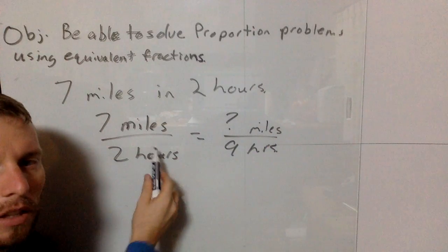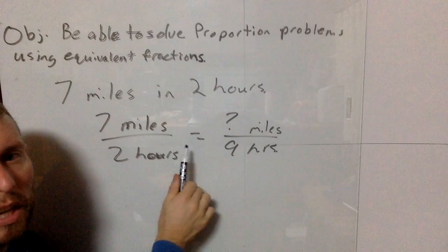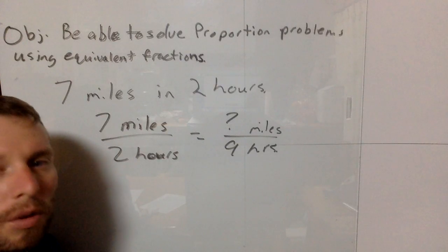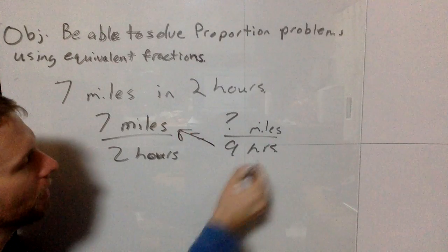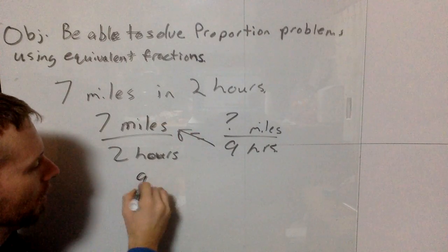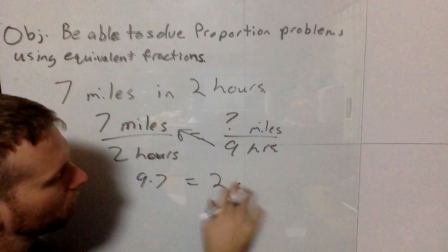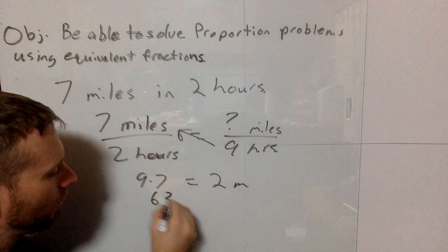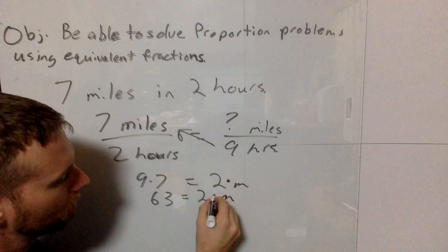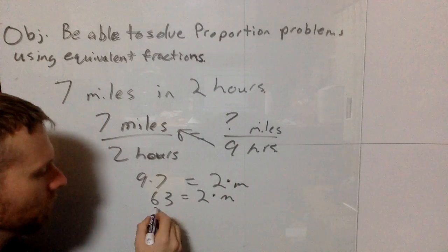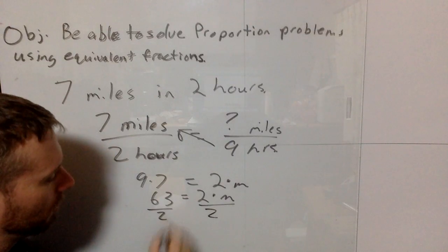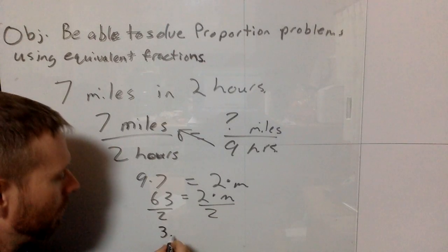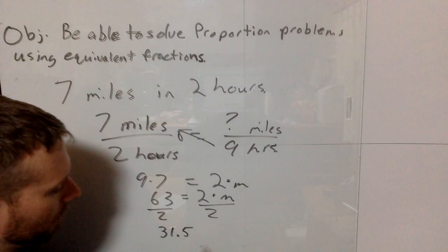This is already simplified. I could find what times 2 equals 9, but it's not a whole number, so let's use cross products. 9 times 7 equals 2 times N for miles. 9 times 7 is 63 equals 2N. Divide both sides by 2, and I'll be able to go 31.5 miles.